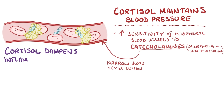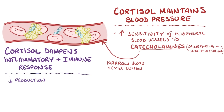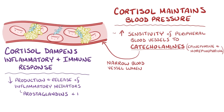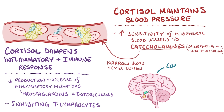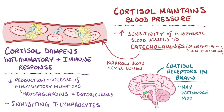Cortisol also helps to dampen the inflammatory and immune response by reducing the production and release of inflammatory mediators like prostaglandins and interleukins, as well as inhibiting the proliferation of T-lymphocytes. Finally, cortisol receptors are present in the brain, where their full effect is still unclear, but might influence things like mood and memory.